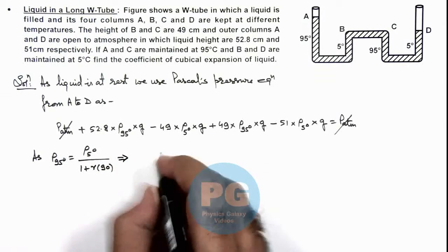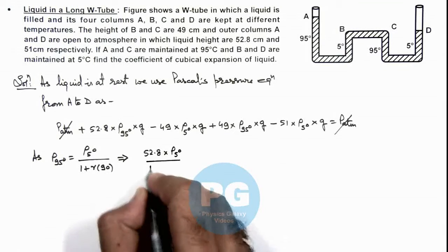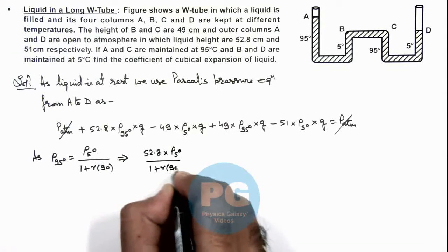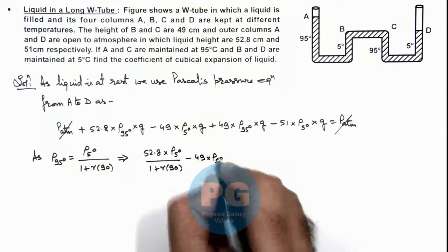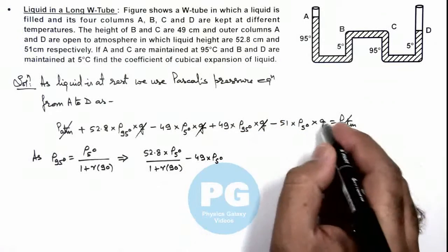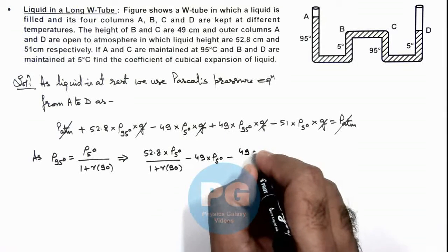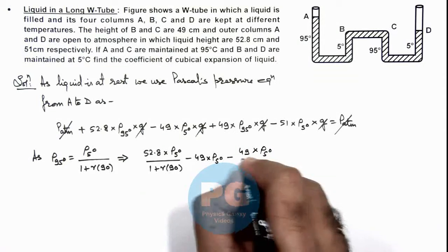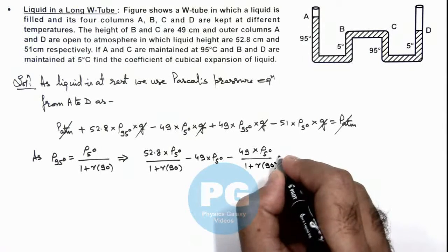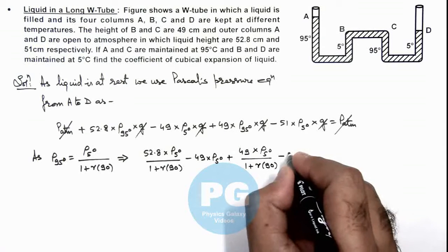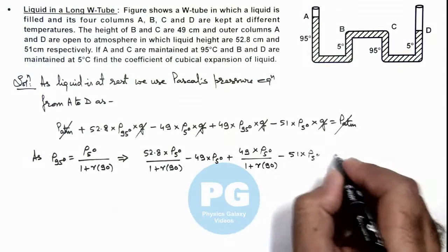It implies we are getting 52.8 multiplied by ρ 5 degree divided by 1 plus γ times 90, minus 49 multiplied by ρ at 5 degree divided by 1 plus γ multiplied by 90, minus this term will be positive, minus this 51 multiplied by ρ at 5 degree, and this should be equal to 0.